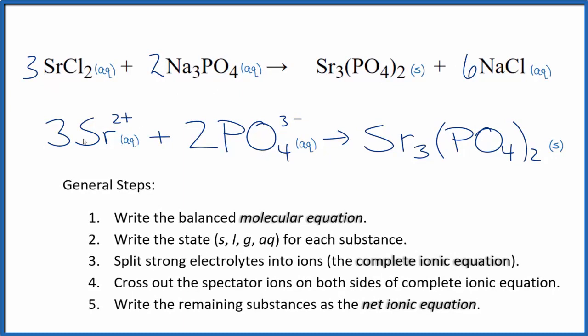You'll note the charge is balanced. Three times two plus, that's six plus. Two times three minus is six minus. So six plus, six minus. That gives us a net charge of zero in the reactants. In the products, net charge is zero since this is a neutral compound. Charge is balanced, and if you count the atoms up, they're balanced too.